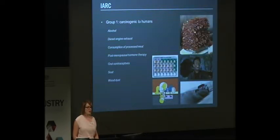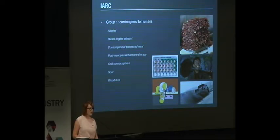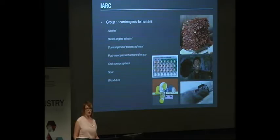In Group 1 — the highest ranking — we have alcohol (and there's no public social media campaign to ban alcohol, by the way), diesel engine exhaust, consumption of processed meat such as bacon, post-menopausal hormone therapy, oral contraceptives, soot and wood dust. Not long after the glyphosate monograph was published, they also published their monograph about processed meat and red meat. There was a media flurry, but it got dismissed fairly quickly with 'you'd have to eat so much of it.' I find it interesting that people can dismiss that because it's something they want, whereas with glyphosate they're not able to say 'you'd probably have to be exposed to a lot of it.'